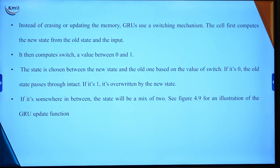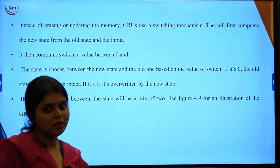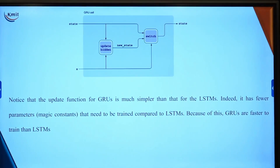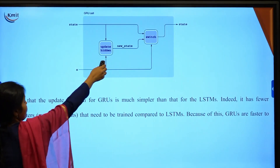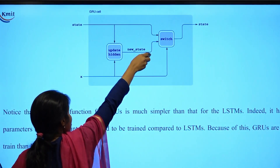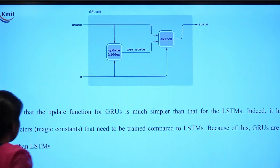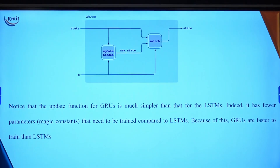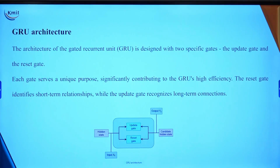Then it computes the switch function — a value between 0 and 1. This switch function chooses between the new state and the old state, deciding whether to process with the current state or also include the previous state. Looking at a single GRU cell, the input from the update state and the previous state are fed through the switch mechanism. The update function for GRU is much simpler than LSTM.